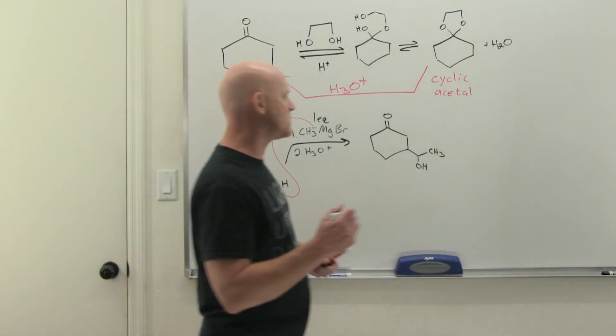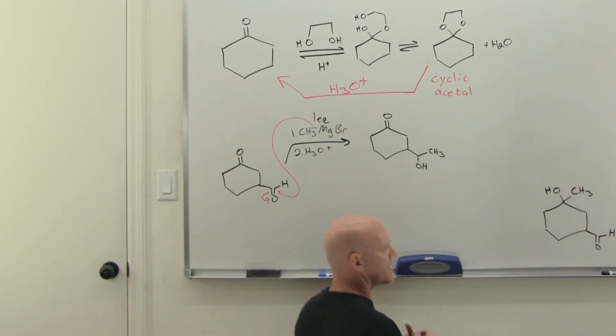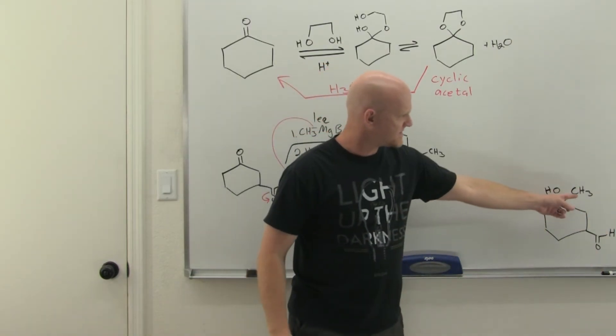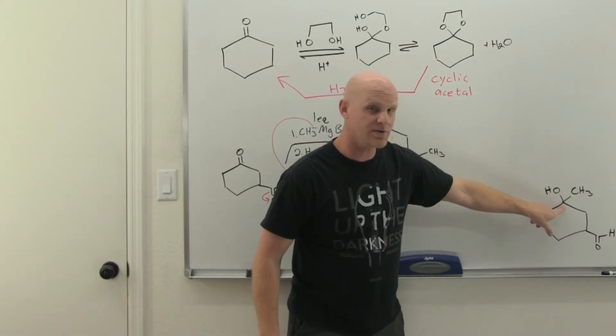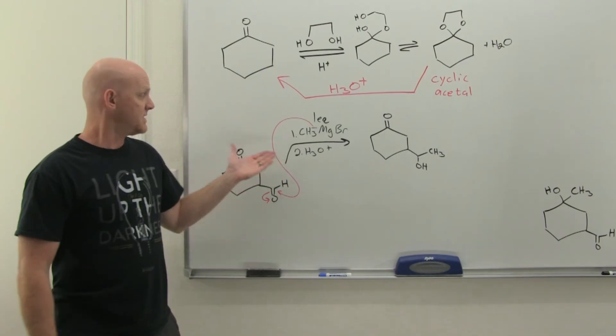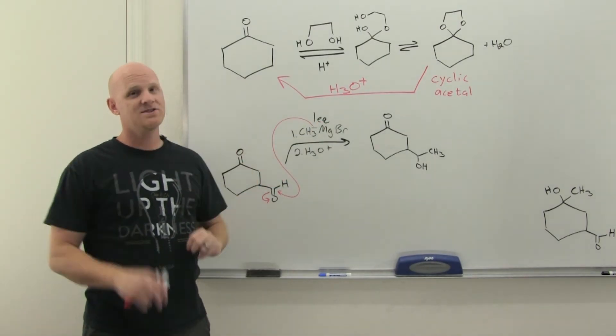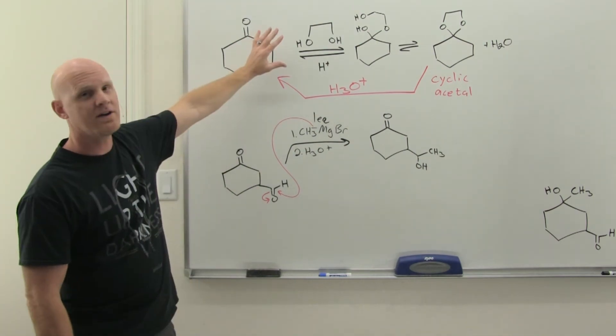However, what if we had wanted for it to have been the ketone that reacted and the aldehyde to have been left alone? What if this had been the product we were after? So addition of the Grignard reagent to the ketone carbonyl and the aldehyde is left alone. Well, the problem is, is under the conditions we've shown, not going to happen. And so this is evidence that you need to use this protecting group here that we've talked about here.